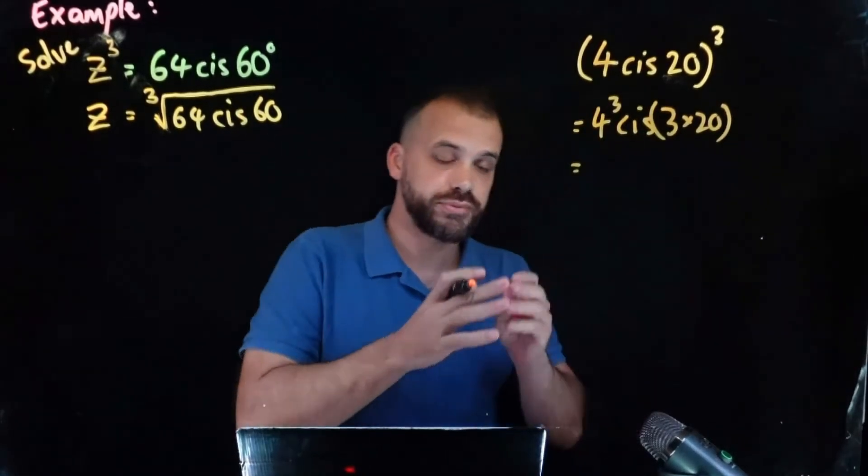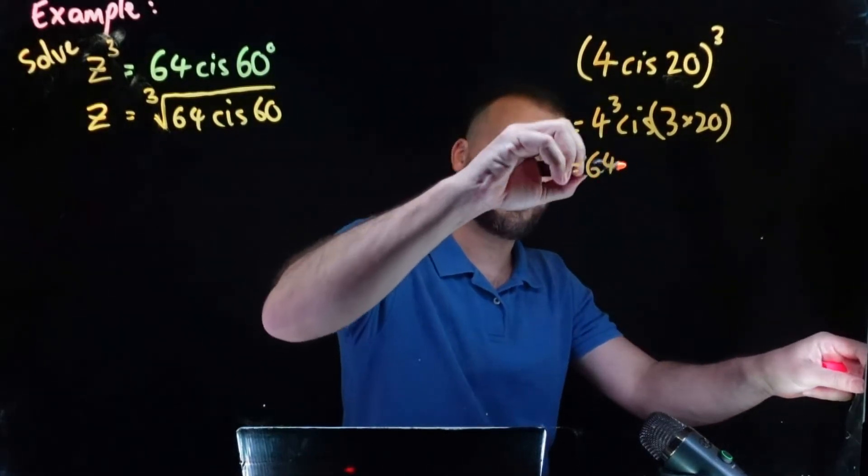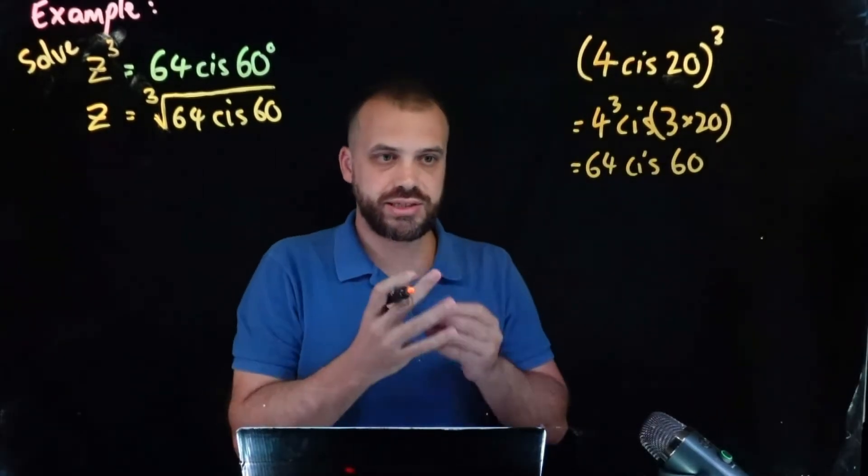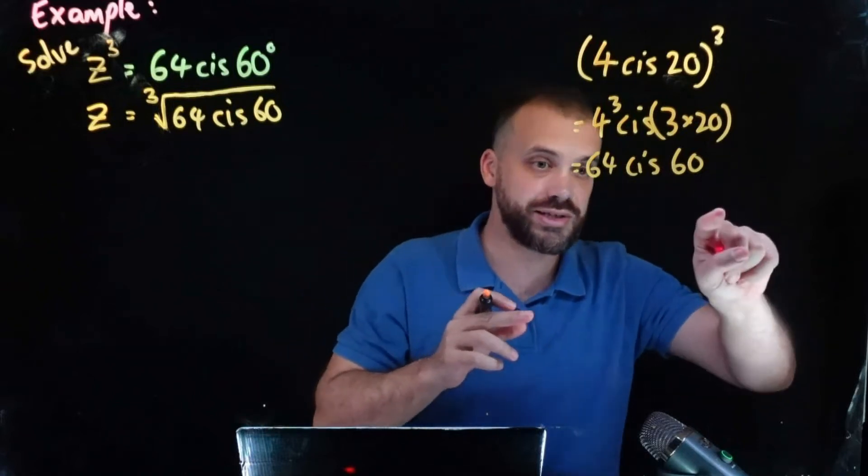Okay so what's the answer to that? Four cubed is 64 cis 60. If we raise four cis 20 to the power of three we get 64 cis 60.